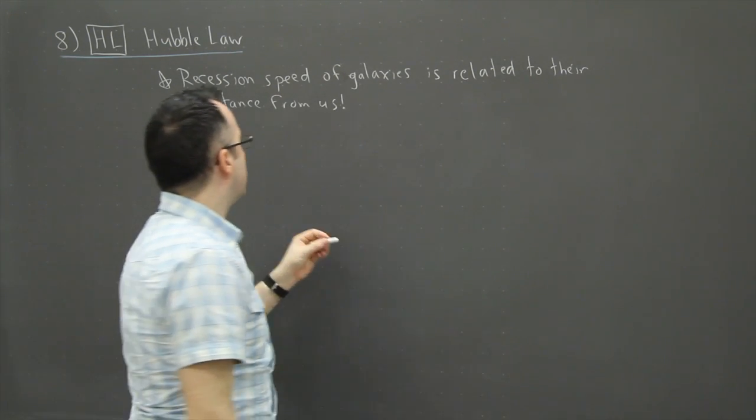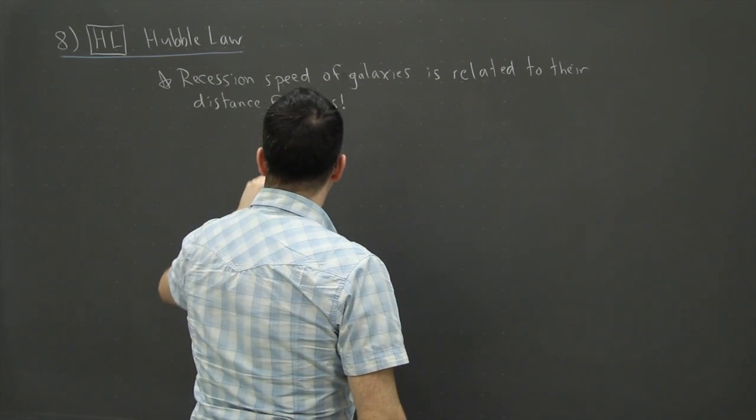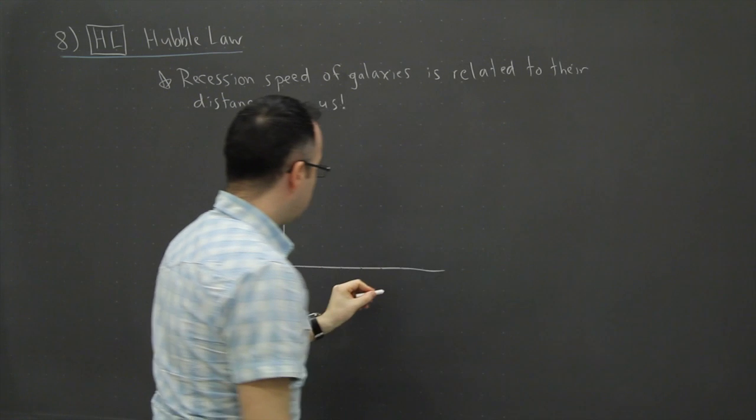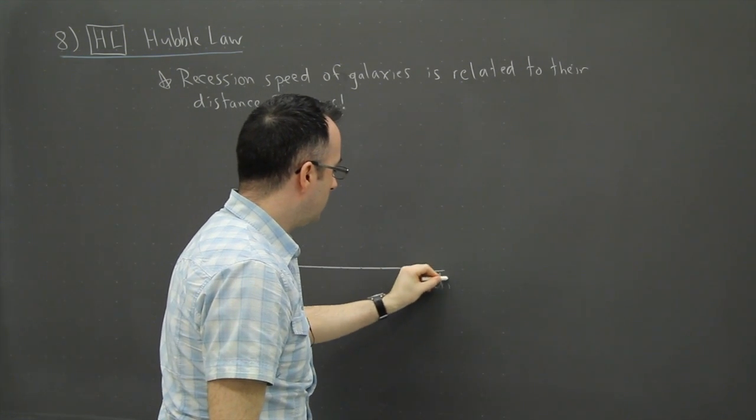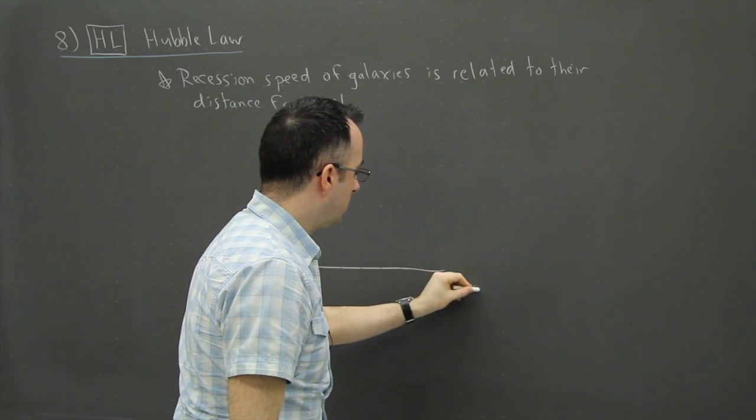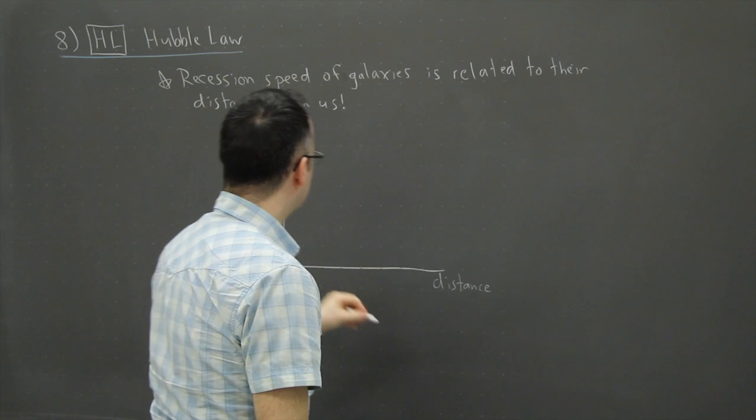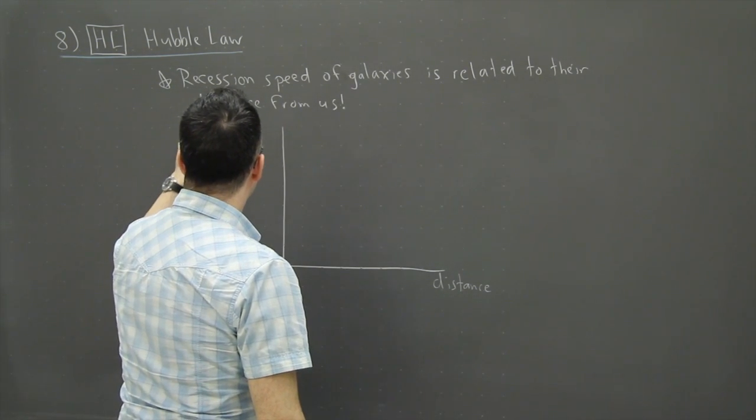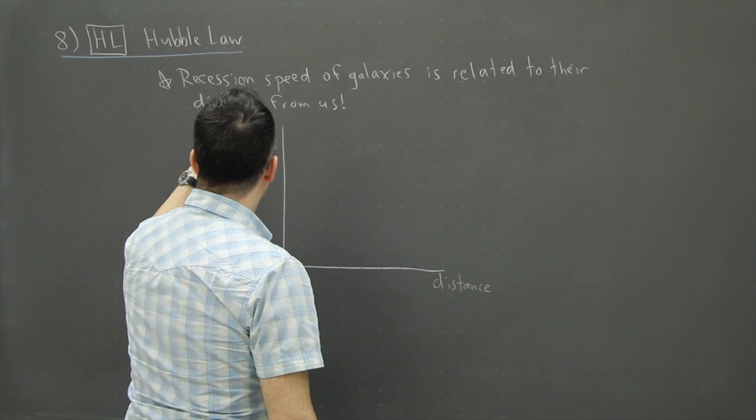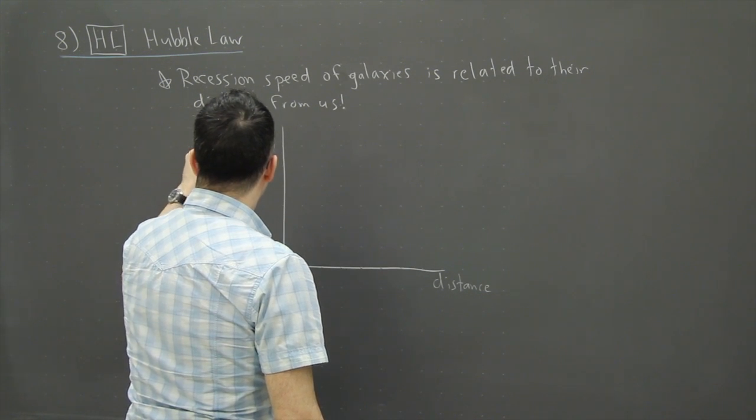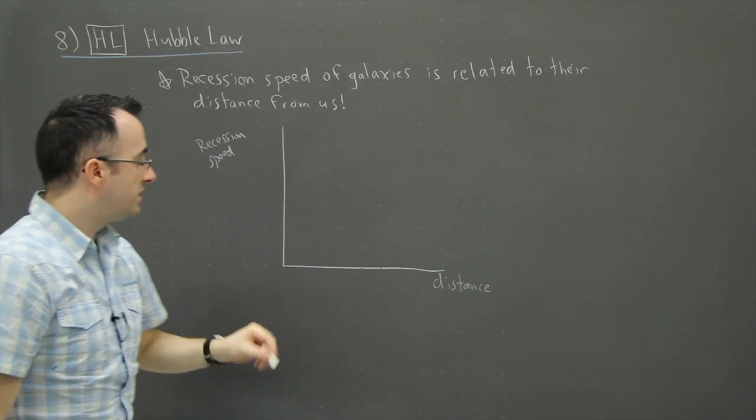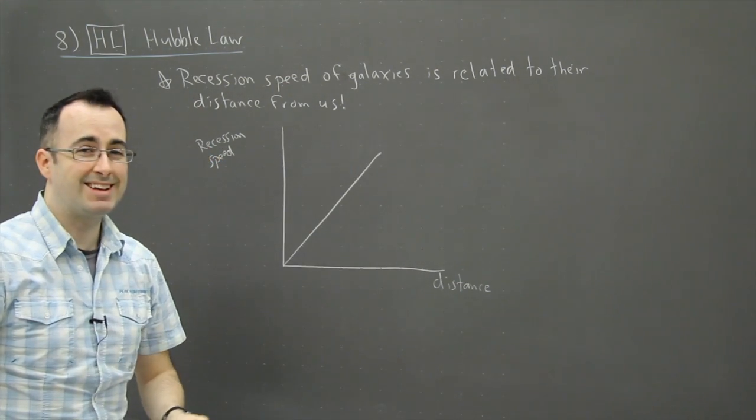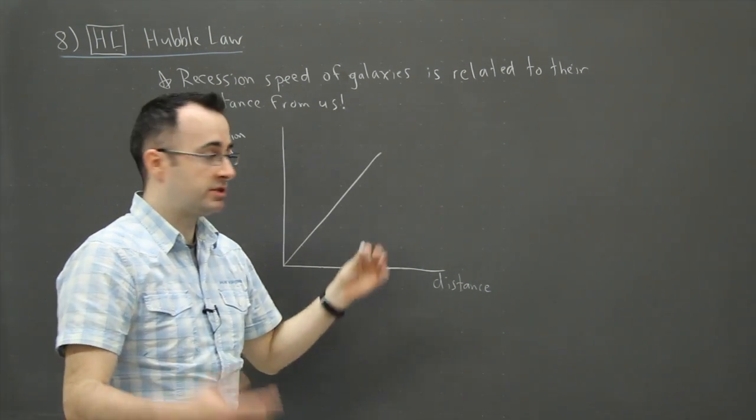So we can then use what's now called Hubble's law. We can actually do a graph of the distance away—the distance from us to that galaxy versus the recession speed. So if we do this, we actually get a pretty much straight line. It's not exactly straight, but it's pretty much straight.